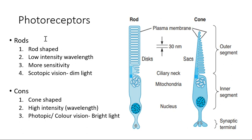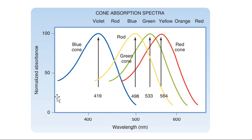Rods are sensitive to low-intensity wavelengths — even a single photon can excite them — and they are responsible for scotopic (dim light) vision. Cones are responsible for high-intensity wavelengths and photopic or color vision in bright light. The graph shows that rod cells are most sensitive at lower wavelengths, while there are three types of cones — responding to blue, green, and red wavelengths — active at higher wavelengths.